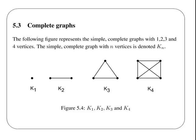This is an important topic here, complete graphs. The following picture represents simple complete graphs with 1, 2, 3, 4 vertices. And the simple graphs with n vertices are denoted KN.